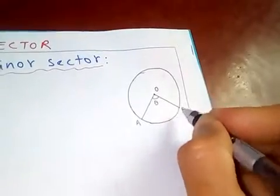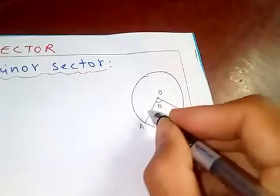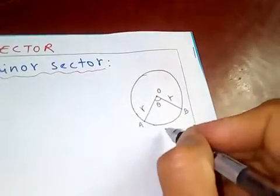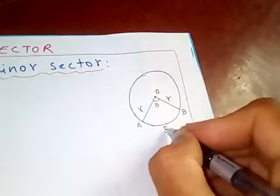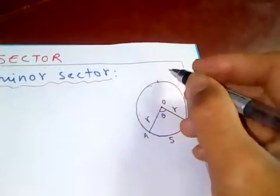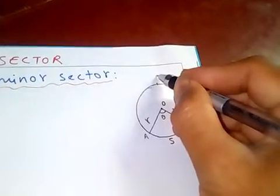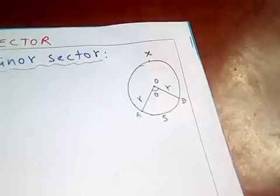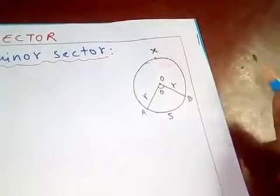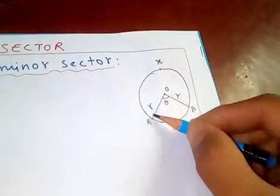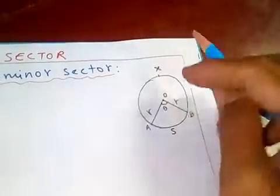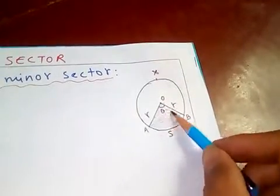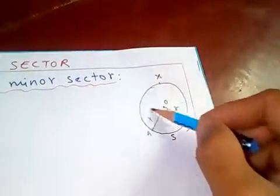Let's say this is point A and this is point B. So O to A and O to B are the radii of the circle. Now if you look here, you can see two sectors in this circle. From the center to the circumference, joining them gives us two sectors — the smaller one is the minor sector, and the larger one is the major sector.